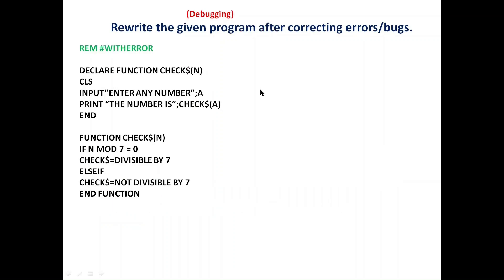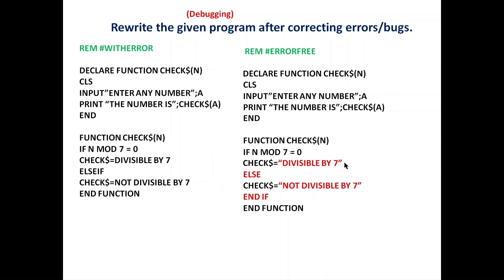Rewrite the given program after correcting errors. The errors are: wherever we need to store a string, double quotation marks are required but were missing; there is no separate condition so we need to write ELSE only, not ELSE IF; double quotation marks are also missing in another place; and END IF is required when we use IF. After corrections, the program is error-free. In the exam, underline the corrected parts.